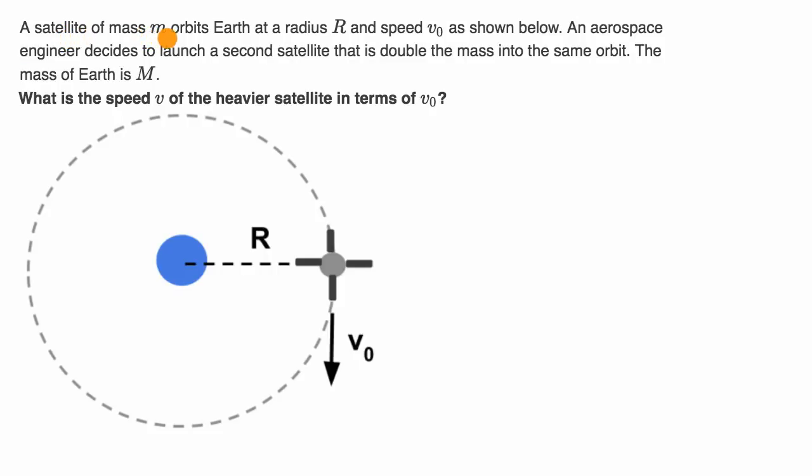A satellite of mass lowercase m orbits Earth at a radius capital R and speed v-naught as shown below. This has mass lowercase m. An aerospace engineer decides to launch a second satellite that is double the mass into the same orbit. The same orbit, so this radius is still going to be capital R. And so this satellite, the second satellite, has a mass of two m.